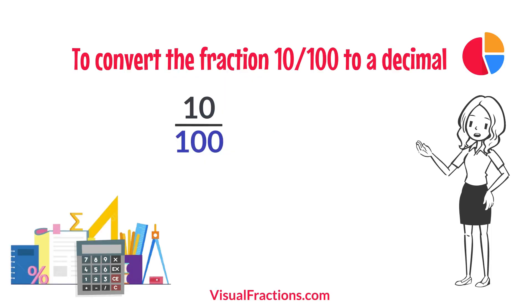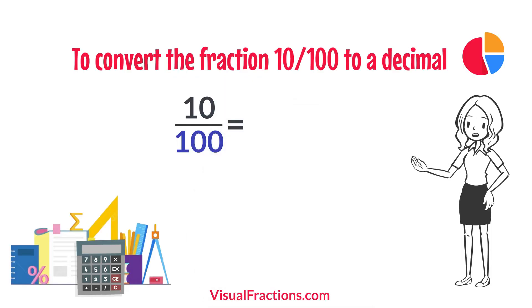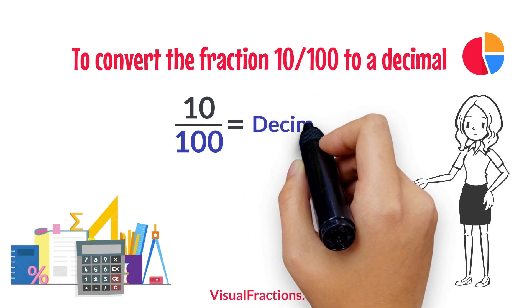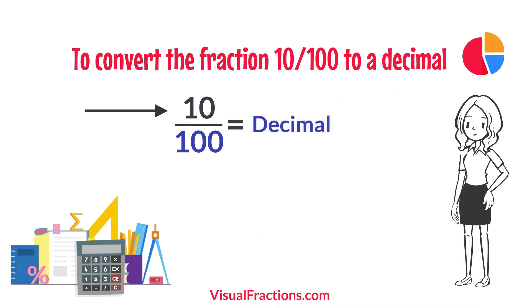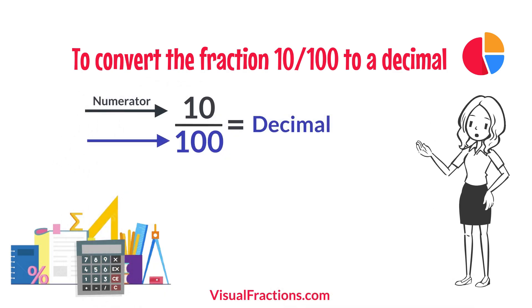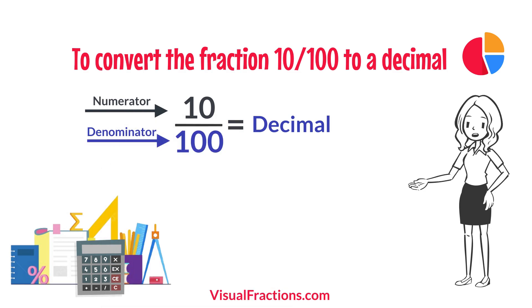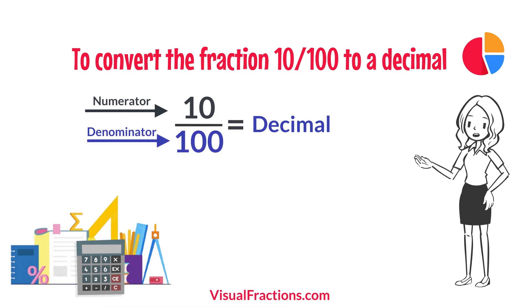To convert the fraction 10 one-hundredths to a decimal, all we need to do is divide the numerator, the top number, by the denominator, the bottom number. So we simply divide 10 by 100.